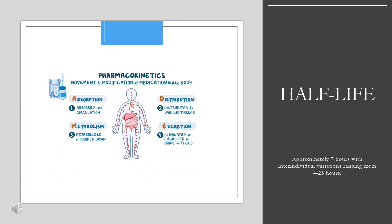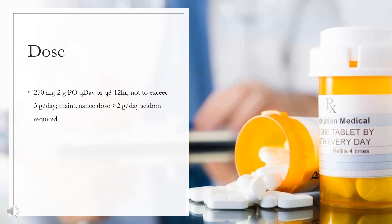Half-life: approximately 7 hours, with inter-individual variations ranging from 4 to 25 hours. Tolbutamide has the shortest duration of action — 6 to 12 hours — of the antidiabetic sulfonylureas.